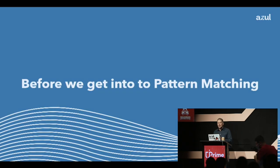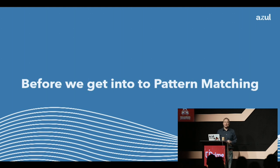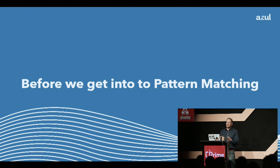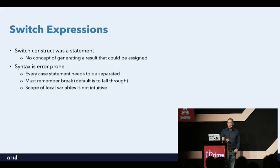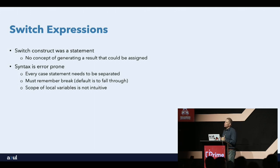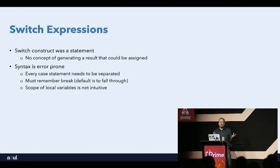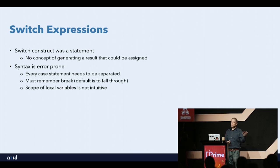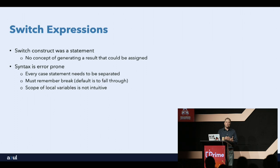Before we get into the pattern matching side of things, we need to look at two features added to Java over the last few years as part of our six-month release cadence. The first is switch expressions. Java has had the switch statement from the very beginning, based heavily on C's syntax — that was deliberate to make it easier for people who had learned C to transition to Java.